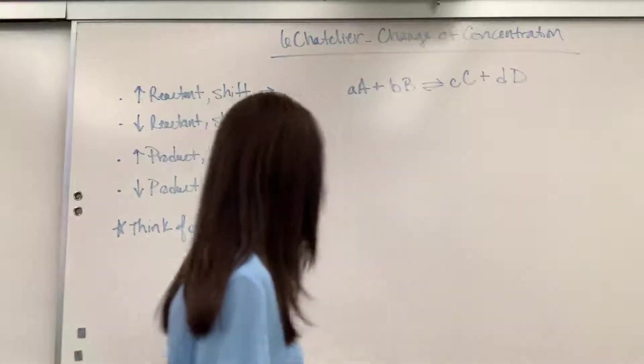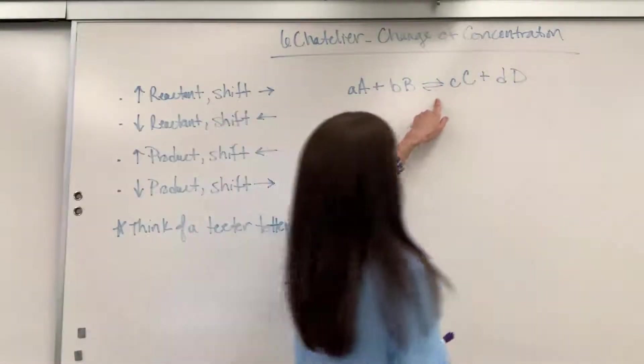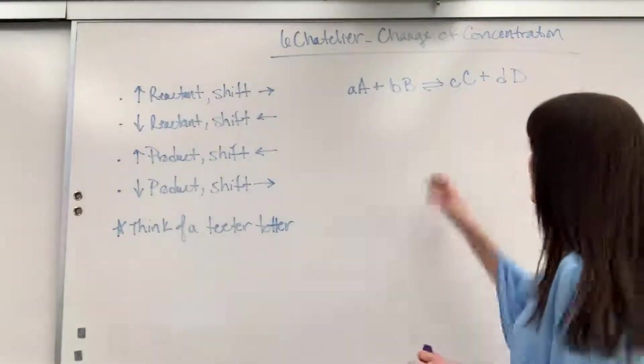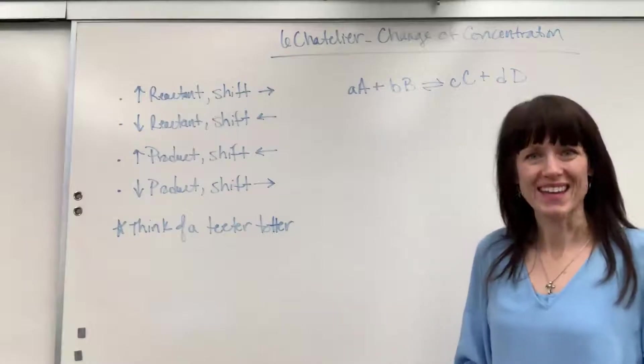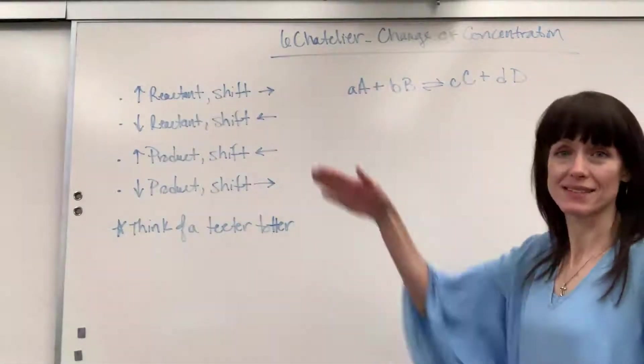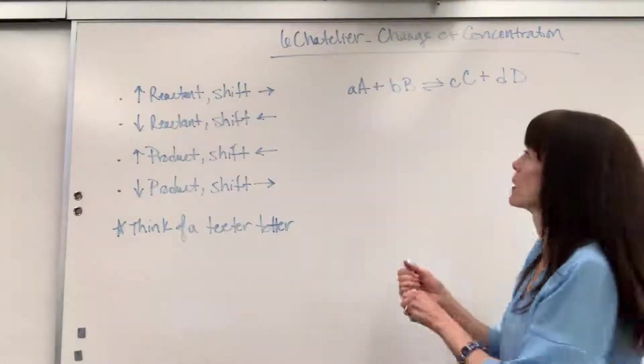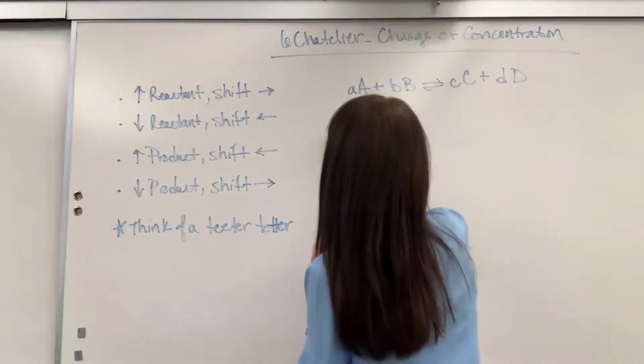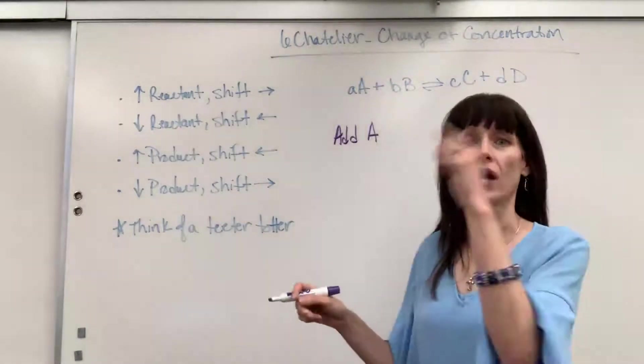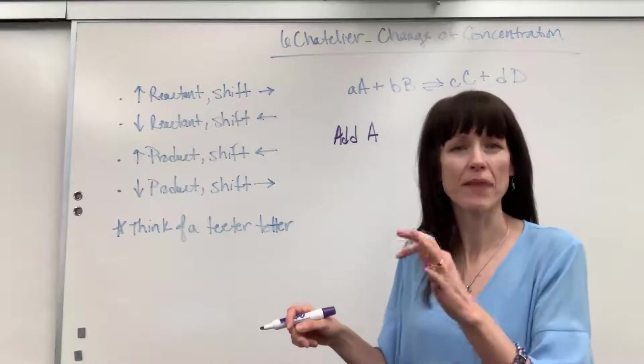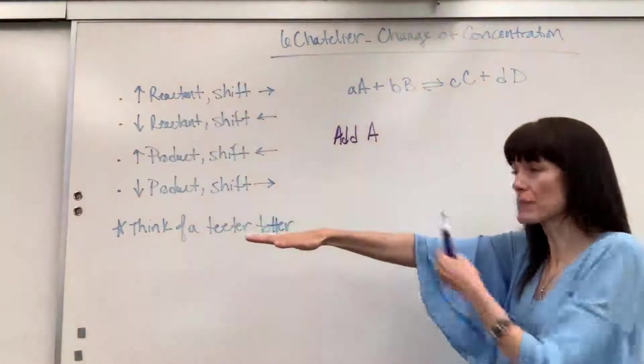So I have our just very generic equation right here that little a plus big b is in equilibrium with big c plus little d. Now we're going to say that this is a perfect equilibrium. We are going to add some of A. So let's add A. Now literally think about the child jumping on the teeter-totter. Think about the masses. If I'm at perfect equilibrium and I add A, what happens to that teeter-totter?